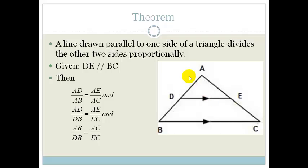Then AD over AB will equal AE over AC, or AD over DB will equal AE over EC, or AB over DB will equal AC over EC. So basically, if we've got a line drawn parallel to one side of this triangle, then it divides these two sides so that they are always in proportion to each other. That's your first theorem.